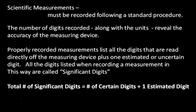Scientific measurements must be recorded following a standard procedure. The number of digits recorded, along with the units, reveal the accuracy of the measuring device. So when a scientist looks at a measurement with a unit in a scientific paper or textbook, they immediately know the level of accuracy of the measuring device based on the number of significant digits that are reported in the measurement.